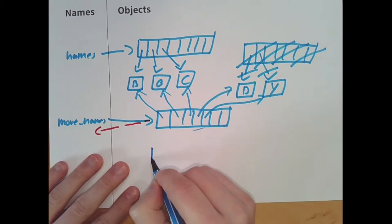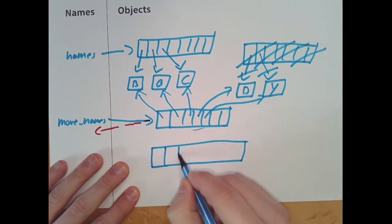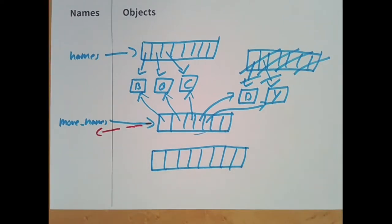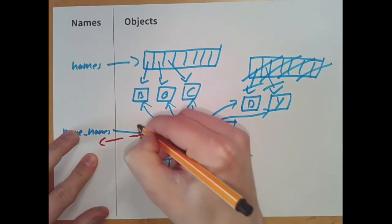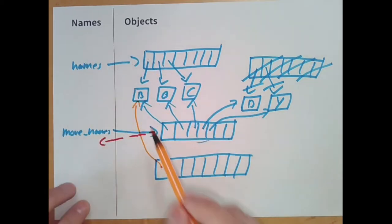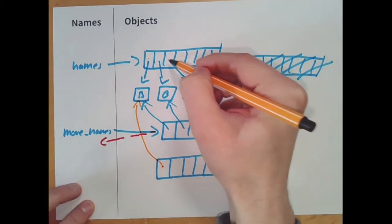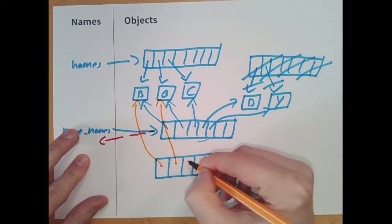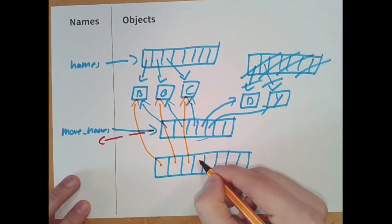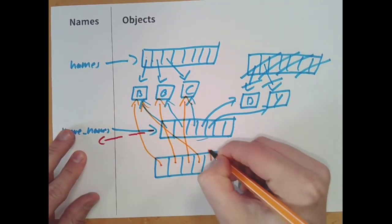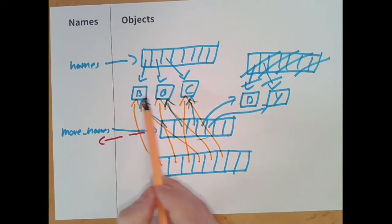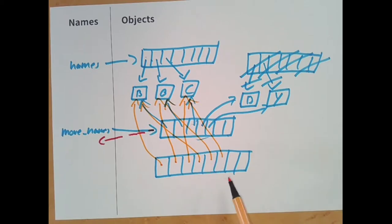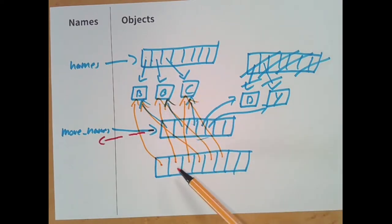The first reference goes to B, the second to O, the third to C — because we're multiplying two times names. Then the fourth reference also goes to B, the fifth to O, the sixth to C. So the string objects B, O, and C now have many references going to them. When we multiply a list, we get back a new list object where the references from the original are simply repeated.